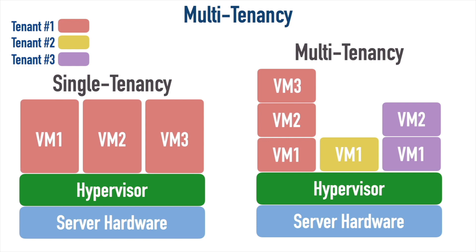That's an example of a server. We could do something similar with a router, using a feature called VRF — Virtual Routing and Forwarding — which allows us to have different routing tables inside the router for different tenants. This might be used by a service provider to have a single router maintain routing tables for different customers. They're isolated from one another but sharing the same underlying routing hardware. The ability to share that underlying software and hardware is the main benefit of multi-tenancy.